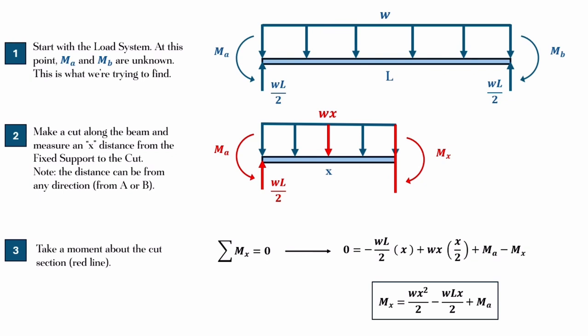But now you go to step three. You take a moment about the cut section, in other words, about that red line that you see to the right of the diagram. That sum of the moments should be equal zero. So, let's go ahead and do that.